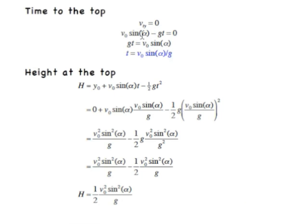So here we're saying V sub Y at the top is zero. So V sub Y is V0 sine alpha minus GT. Solve for time. GT equals V0 sine alpha, and then divide both sides by G equals V0 sine alpha over G.